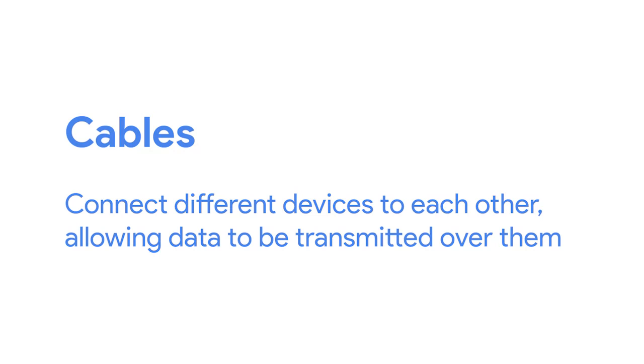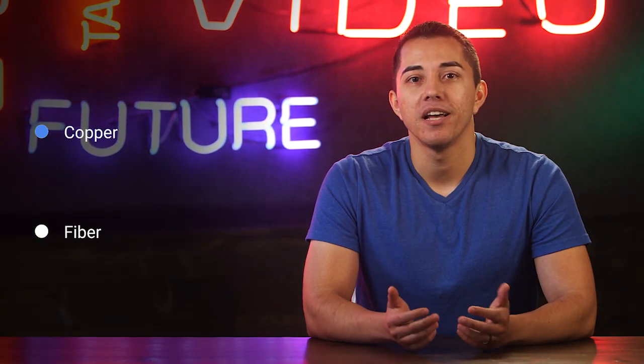Let's start with the most basic component of a wired network: cables. Cables are what connect different devices to each other, allowing data to be transmitted over them. Most network cables used today can be split into two categories: copper and fiber.